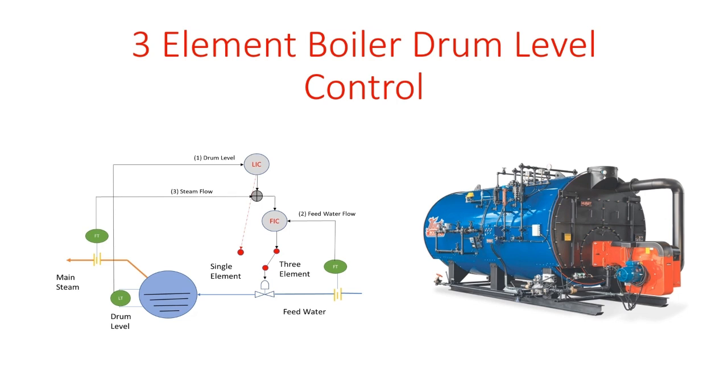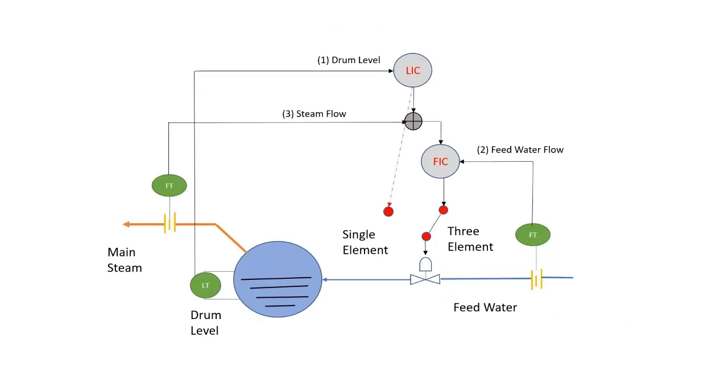This is a simplistic diagram of the three element boiler drum level control. As you can see, this is the boiler drum and there is a level transmitter which measures the level of the boiler.